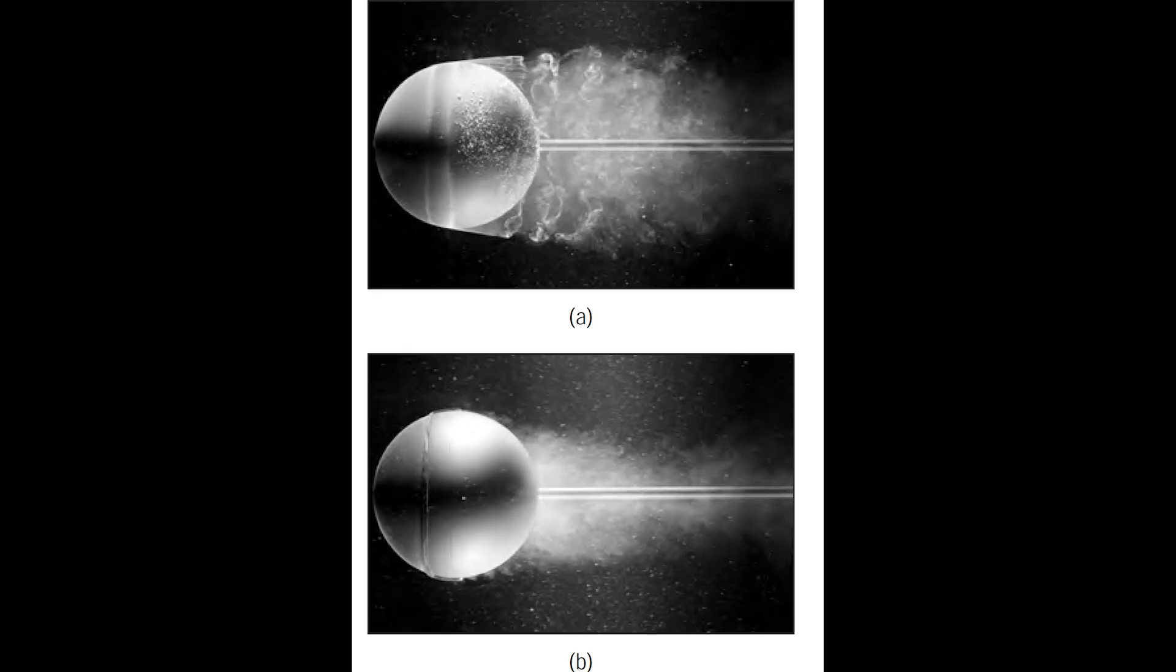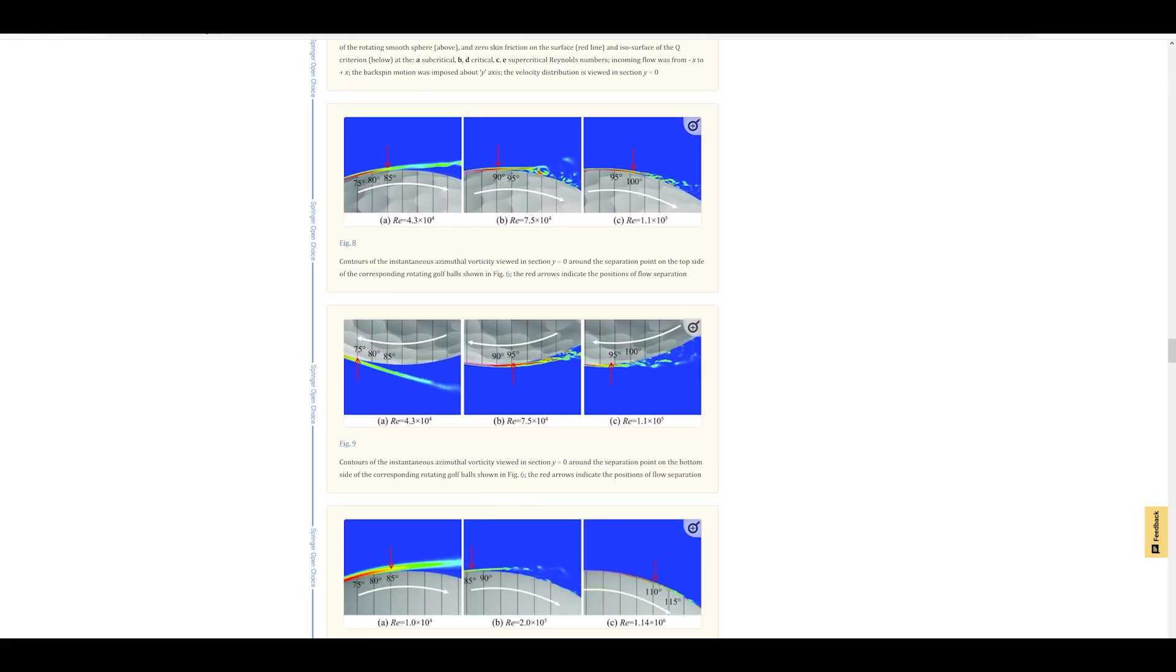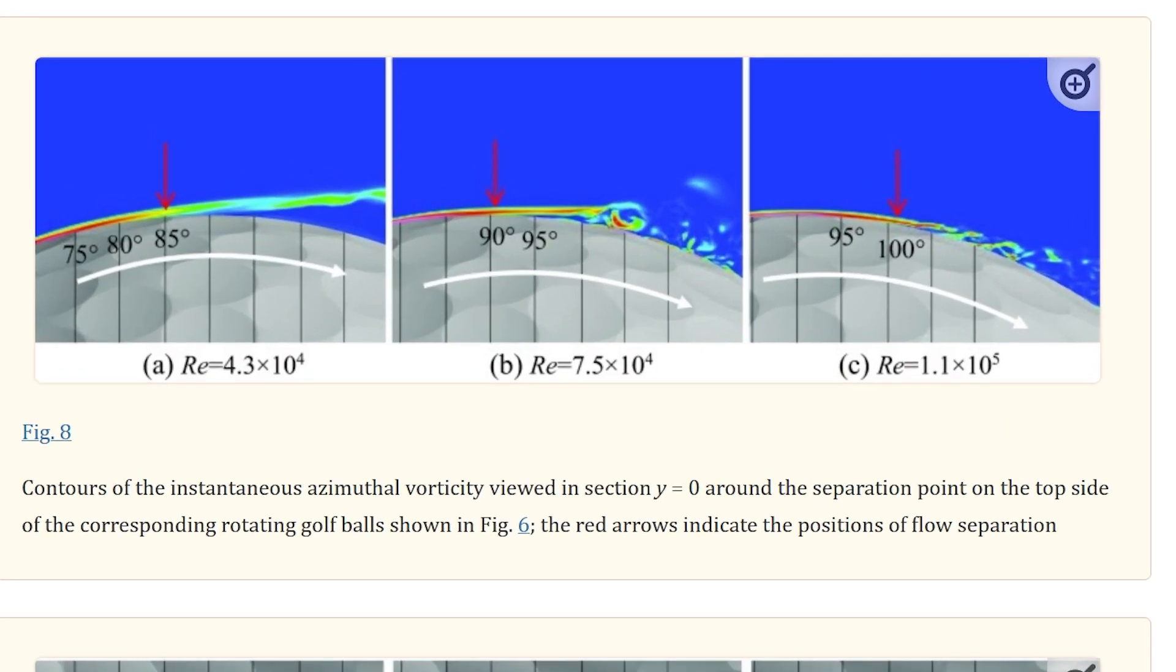This large reduction in drag coefficient is due to the flow of the boundary layer becoming turbulent, which moves the separation point further on the rear of the body, reducing the size of the wake and the magnitude of the pressure drag.